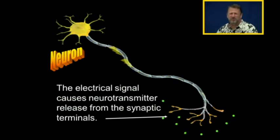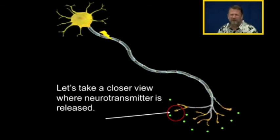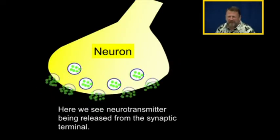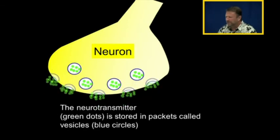The electrical signal that goes down the axon, that action potential, is what causes neurotransmitter to be released from the synaptic terminal. Let's take a closer view where neurotransmitter is being released. Here we see neurotransmitter being released from the synaptic terminal. The neurotransmitter is denoted by the little green dots.